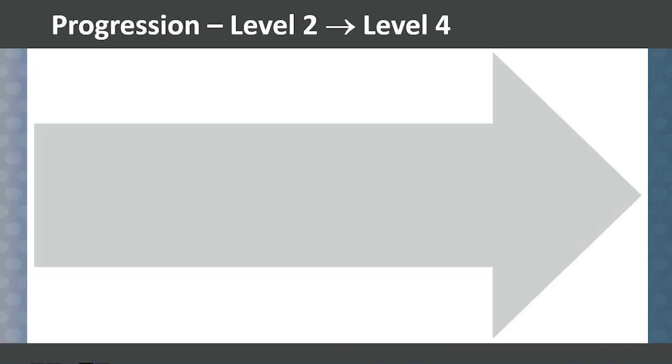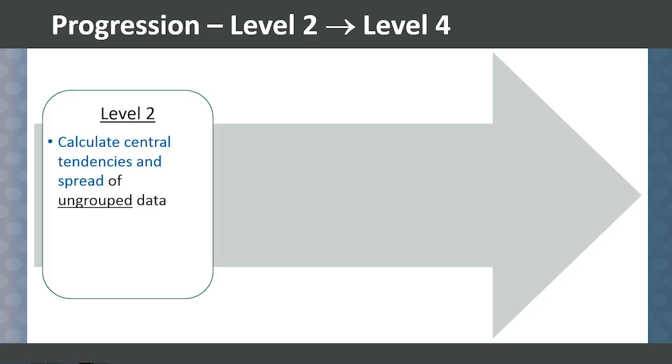Students have been learning data handling since Level 2. Let's take a look at how this part of the curriculum has progressed through the levels. In Level 2, students learned to calculate central tendencies and spread of univariate and ungrouped data. They also learned to represent data effectively using various charts and graphs.